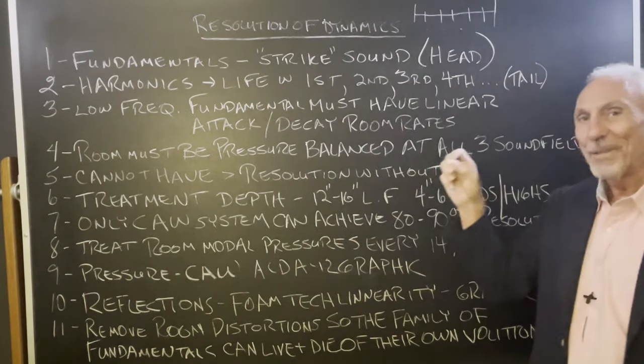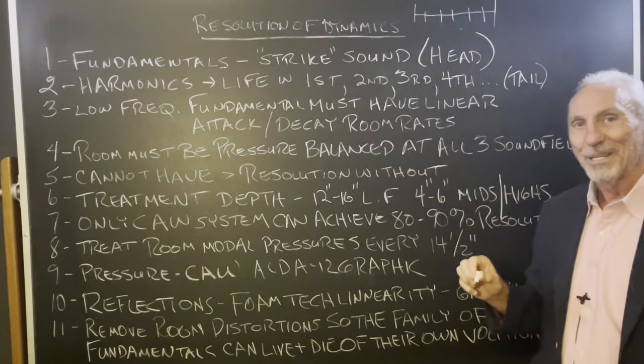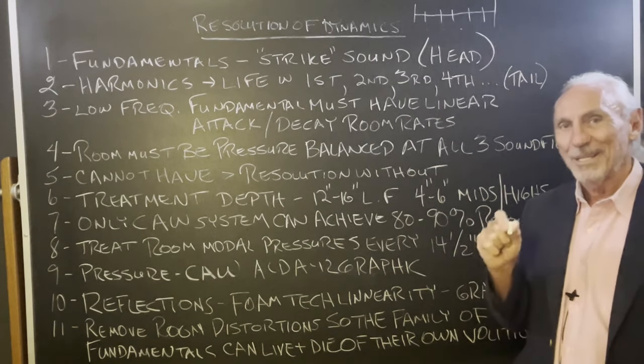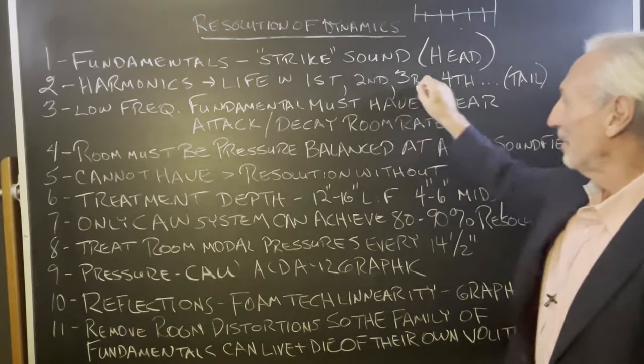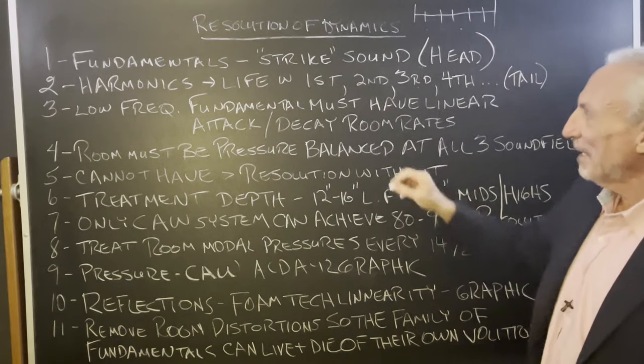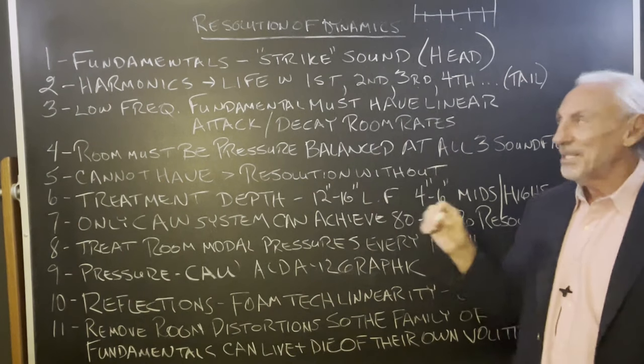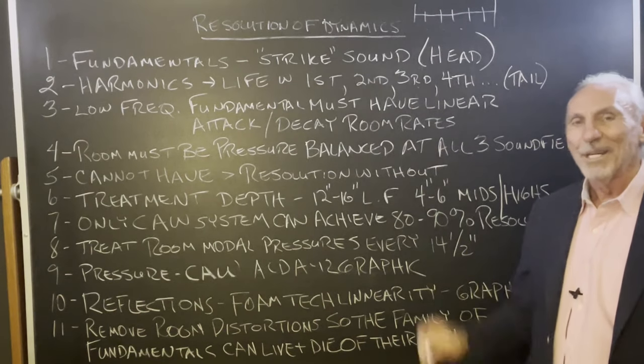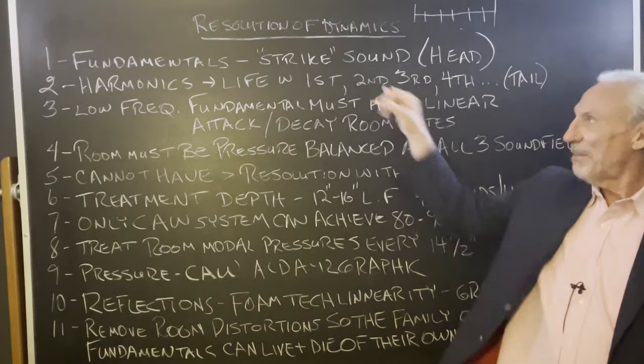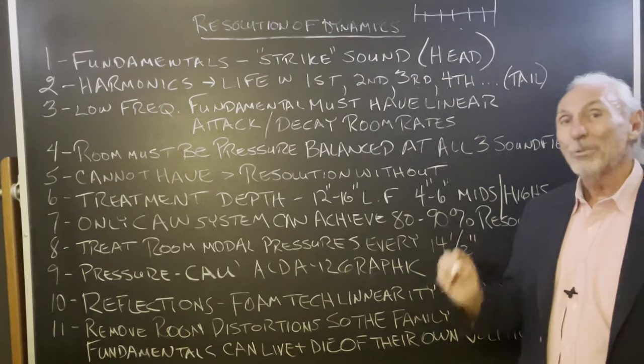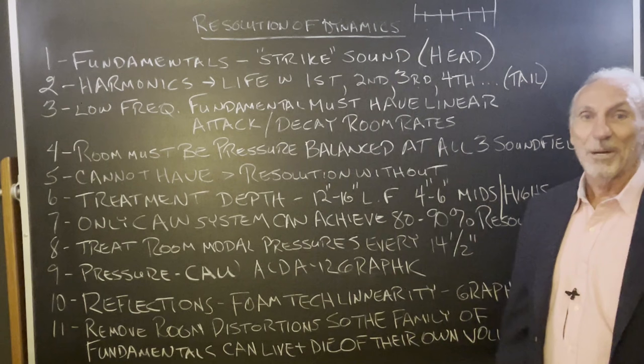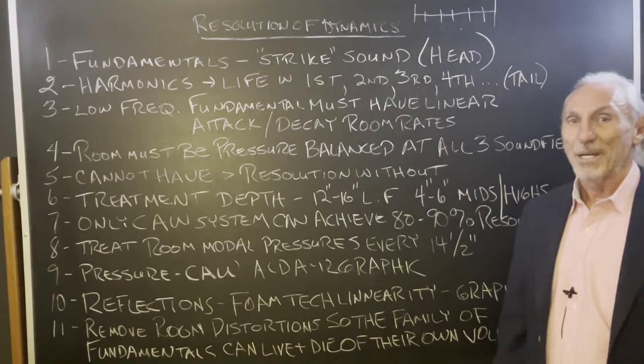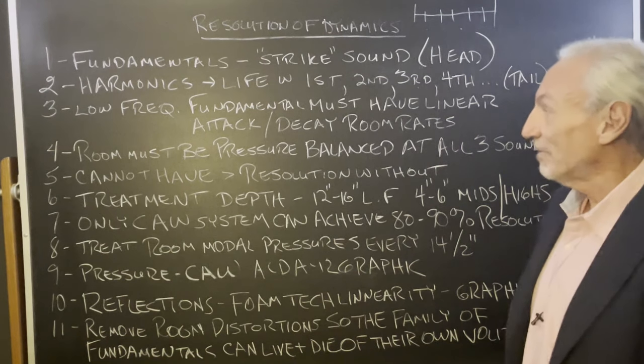Low frequency fundamentals must have a very linear attack and decay rate. The attack is really important, but if you over-absorb to get a real tight attack, you're going to hurt the first, second, third, and fourth order harmonics. You got to be careful when you're designing and using absorption - use the fundamental, the head, but also keep in mind the harmonic tail. Diffusion can come in as a tool to punch the harmonics up. You can over-absorb and get definition, then bring diffusion in for the harmonics and make the room sound larger. It's a win-win across the board.